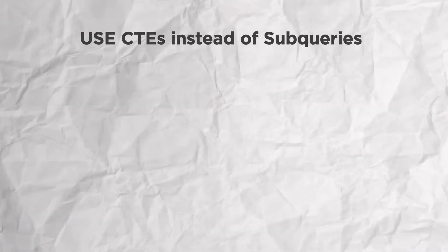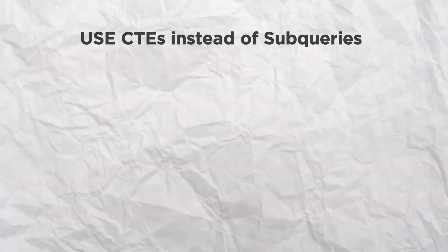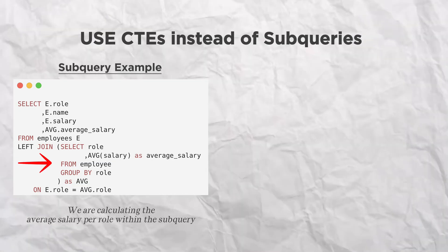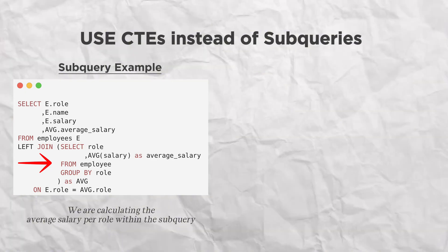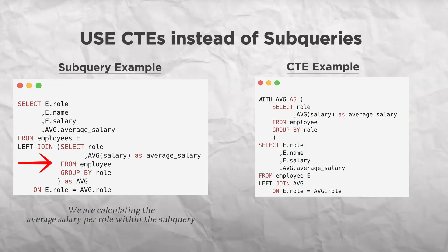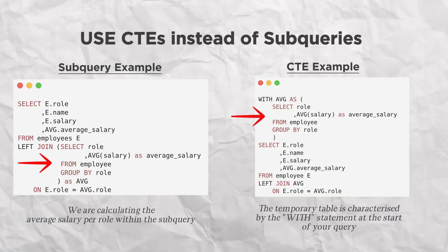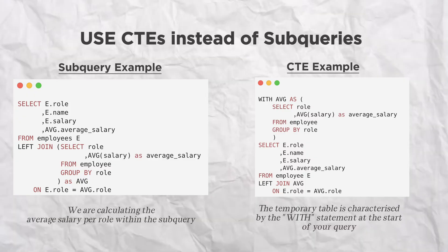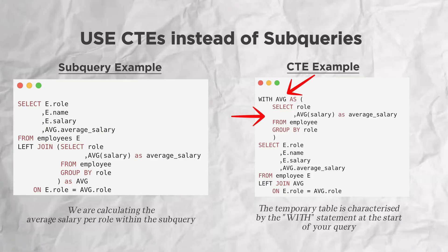My next tip is to use CTEs when writing complex queries instead of subqueries. A subquery is when you use a SELECT statement inside another SELECT statement. It's not so bad when your query is really simple, but when it comes to debugging a really complex long script, subqueries can get very messy and confusing to follow. Instead, you should use a CTE — or common table expression — which is basically a temporary table generated from a particular query that can be used throughout the rest of your script. Not only does this make your code a lot easier to debug and understand, it also uses less CPU to execute, as you perform the query only once, store the table name in memory, and then reuse the output as required.